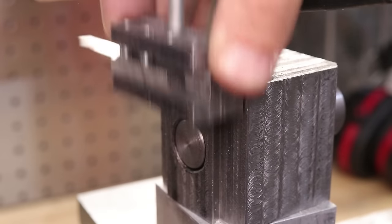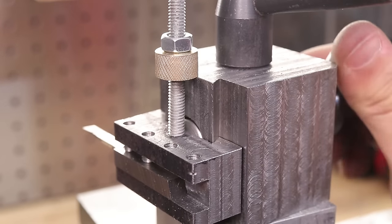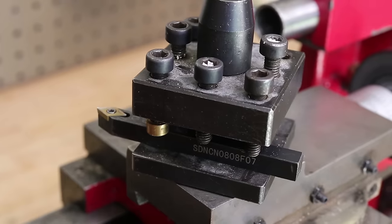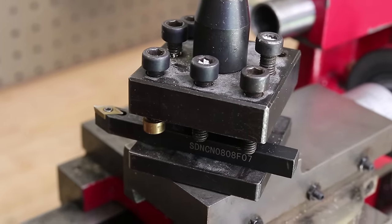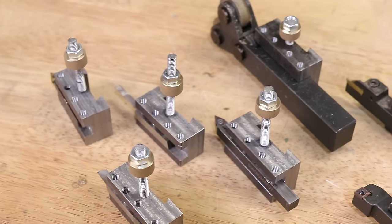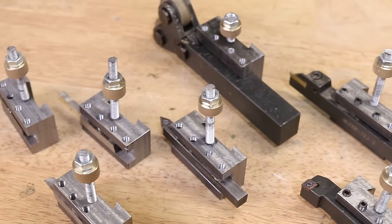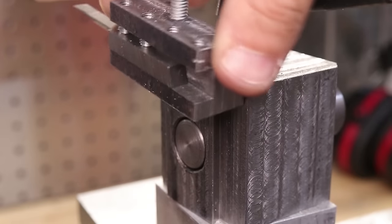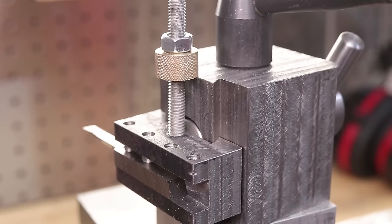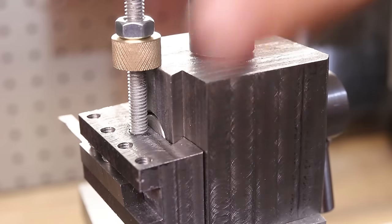The second upgrade I'd recommend is getting a quick change tool post. These lathes typically come with a four-way tool post which limits you to using tools that are 8 millimeters or less in height. A quick change tool post allows you to use bigger size tools and also allows you to quickly change your tools in a matter of seconds. You won't necessarily get better parts but from an ease of use perspective they are certainly worth it.